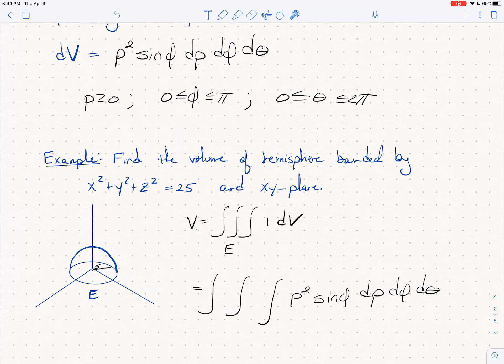And now I just have to figure out the bounds. And so I just look at this solid and I say, what's rho doing? Rho's going from 0 out to 5 everywhere, right? That's as far away as you can get from the origin is 5.